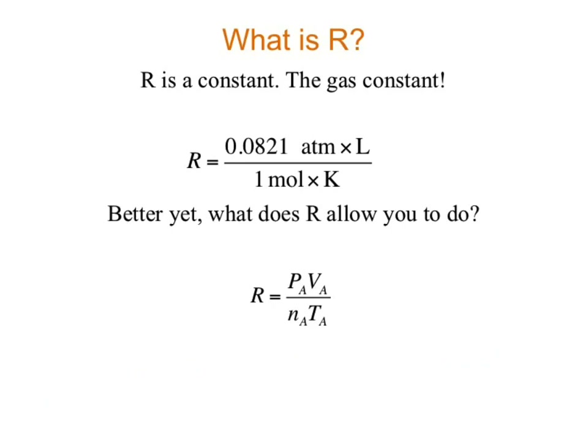Because R is a constant, if I have a gas and change the temperature or volume, I can compare those different conditions to solve for all other variables. Or if I want to know the pressure for an unknown system, and I know the number of particles, temperature, and volume, I can predict the pressure. This equation allows me to solve for an unknown variable — requiring that I know three of the four variables.